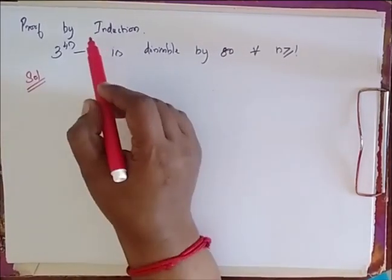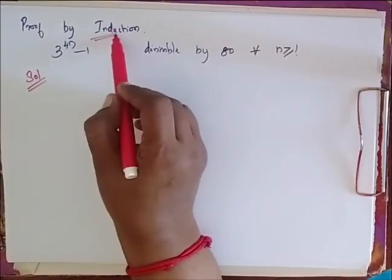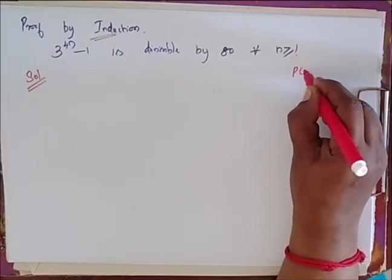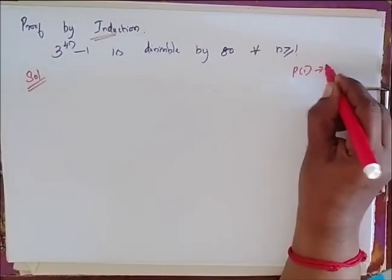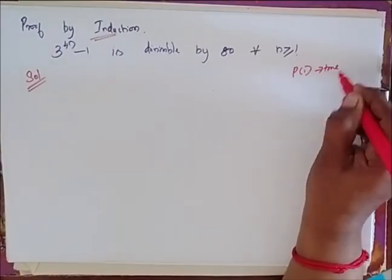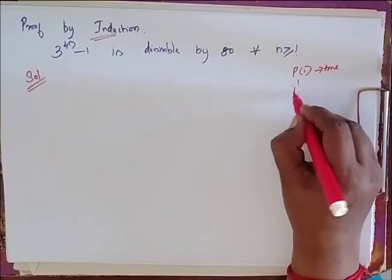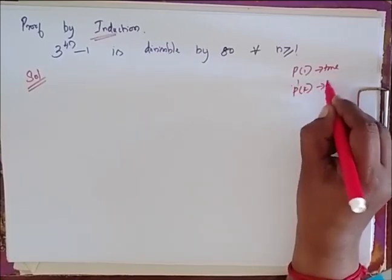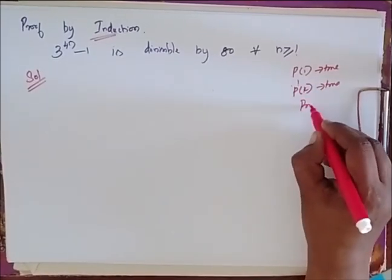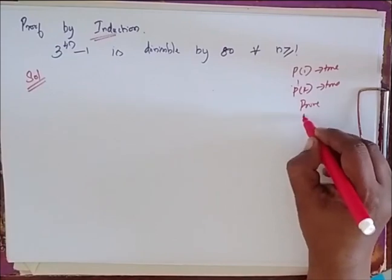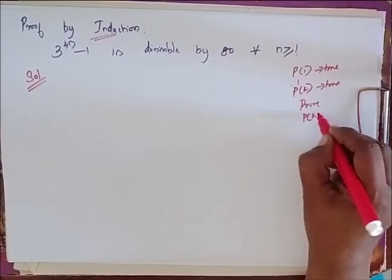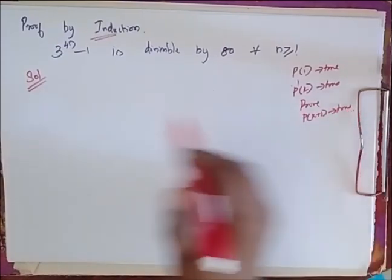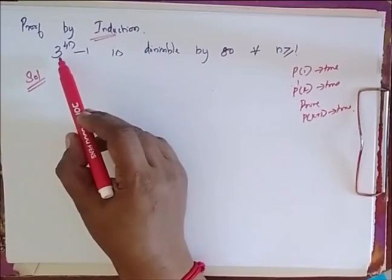Proof by induction: whenever I say proof by induction, I have to prove that it is true for P of 1. Since it is true for P of 1, I assume that it is true for P of K, then I have to prove that it is true for P of K plus 1. Now I have the problem.